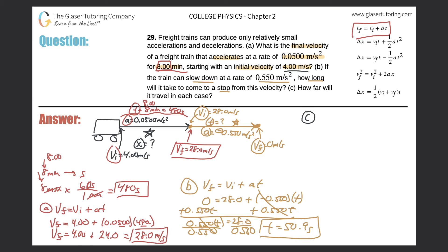I need to find a relationship between all my variables. There's a bunch of formulas we can choose — let's use the second one. Displacement equals the initial velocity multiplied by time plus one half of the acceleration multiplied by time squared.